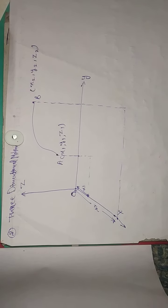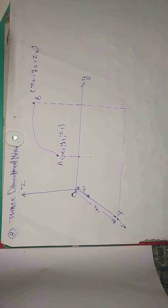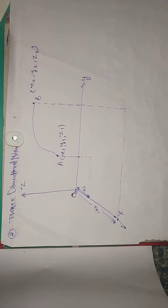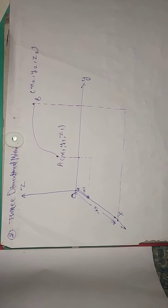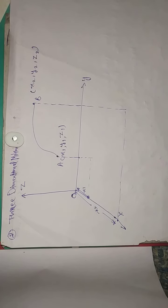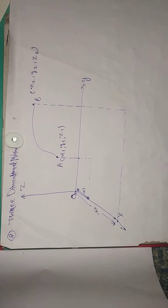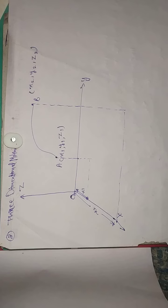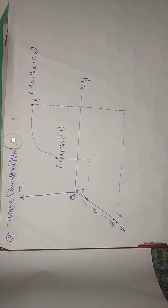As shown in the figure, at the initial time the particle was at position A, and finally it reaches position B, moving through space.